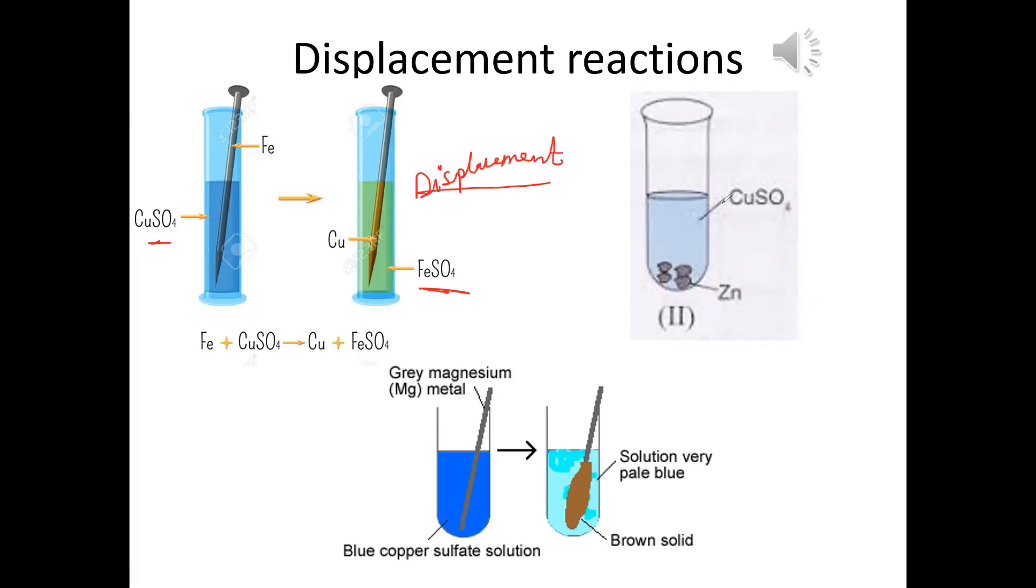This type of reaction is called displacement reaction. Similarly, zinc and copper sulfate mix together. Zinc is more reactive than copper. So, zinc displaces copper from copper sulfate. Again, this is displacement reaction. Here also, copper sulfate and magnesium we have taken. All these reactions involve color change. And because here a more reactive element displaces a less reactive element, we call this as a displacement reaction.